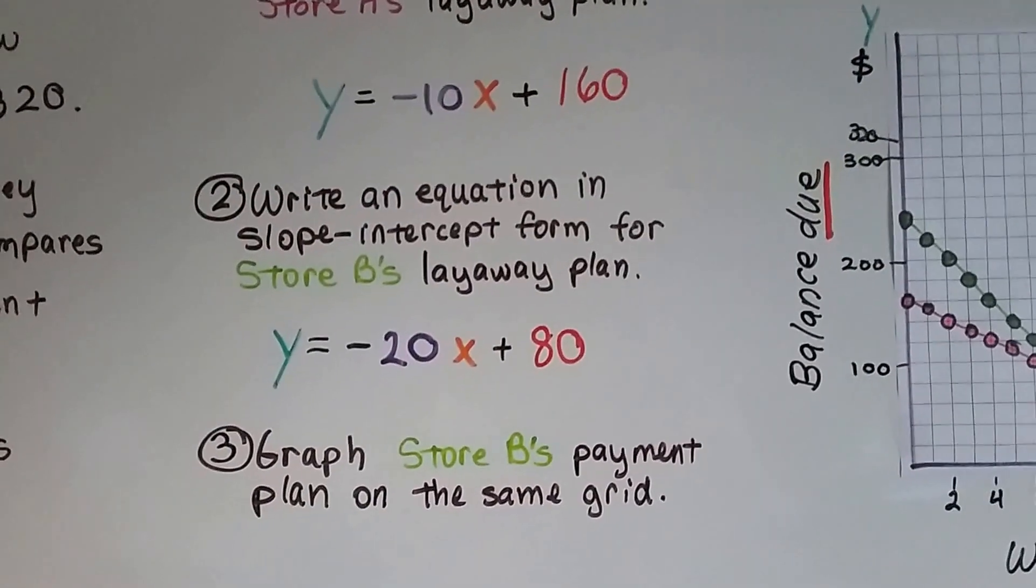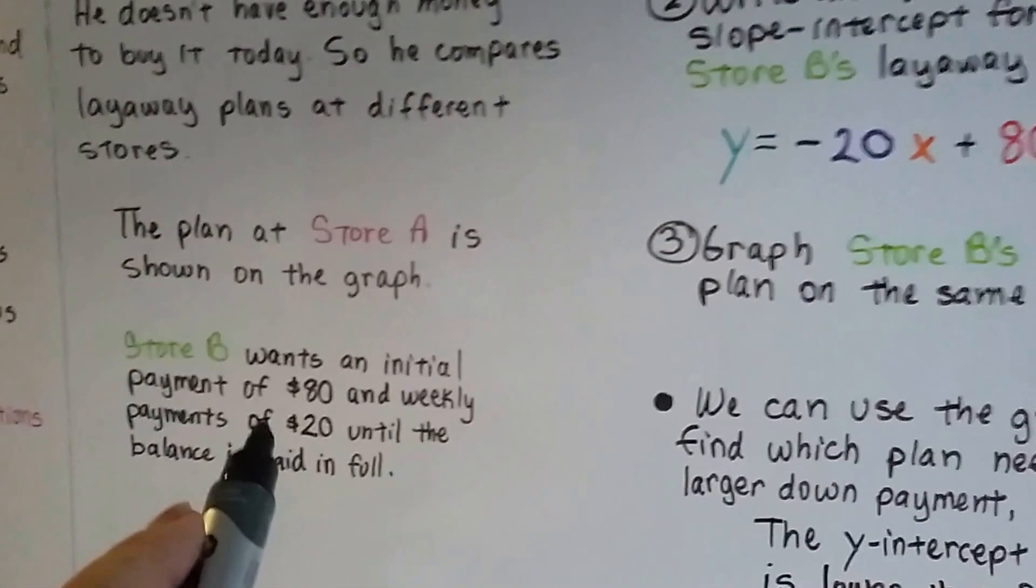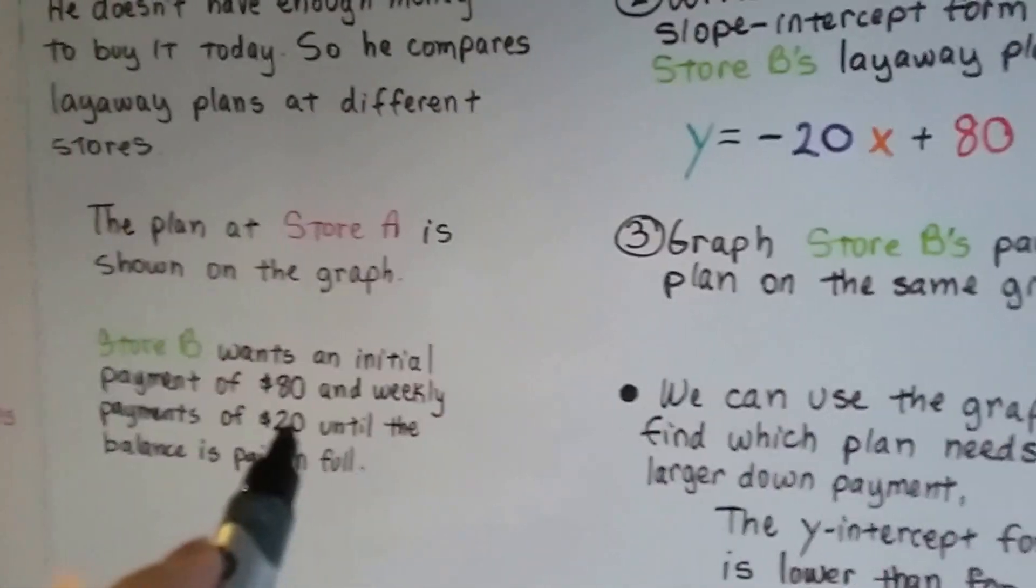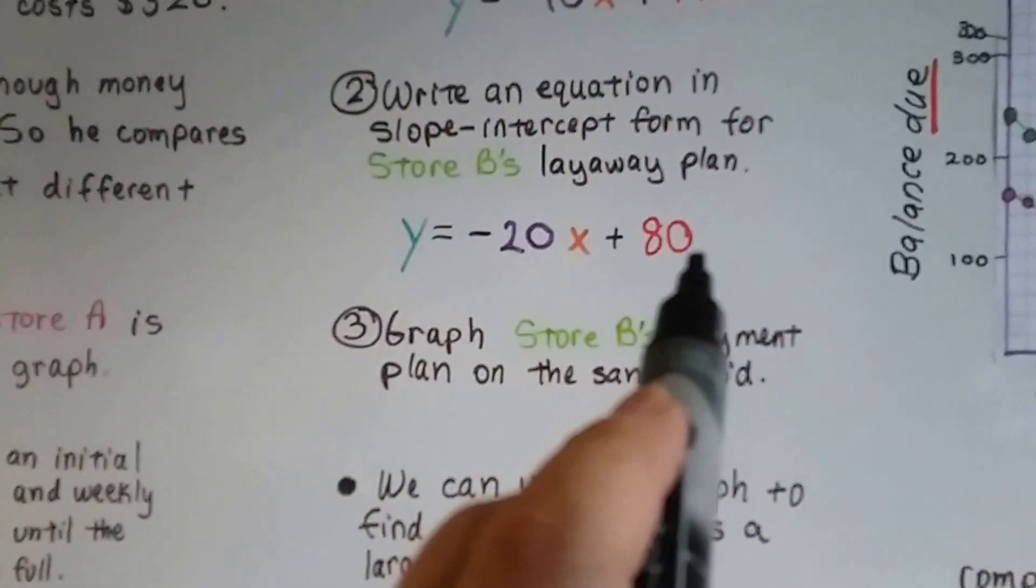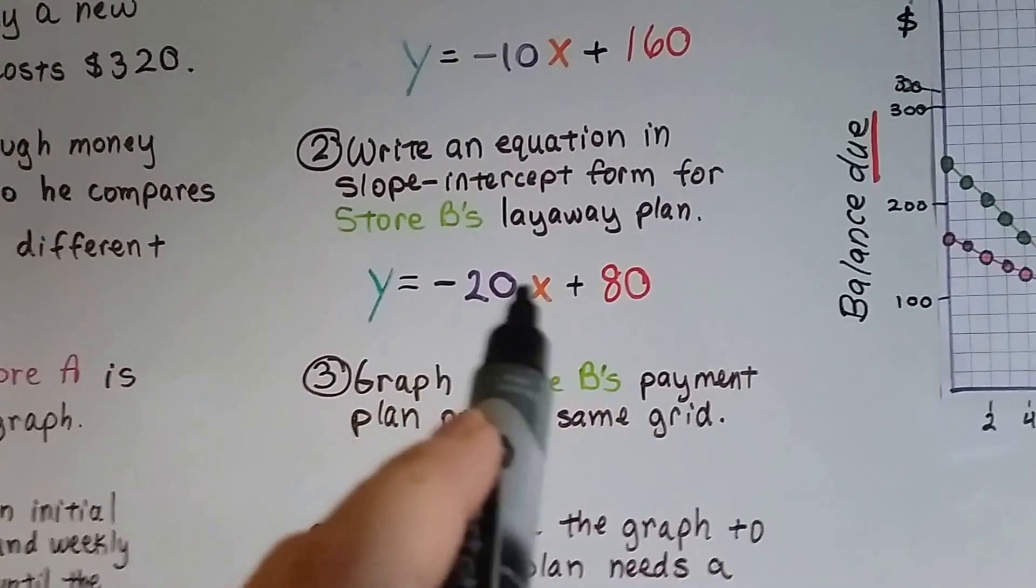So we needed to write an equation in slope intercept form for store B's layaway plan, and that was an $80 initial down payment and $20 a week. So that's $80 for the y-intercept B minus 20x for each week.